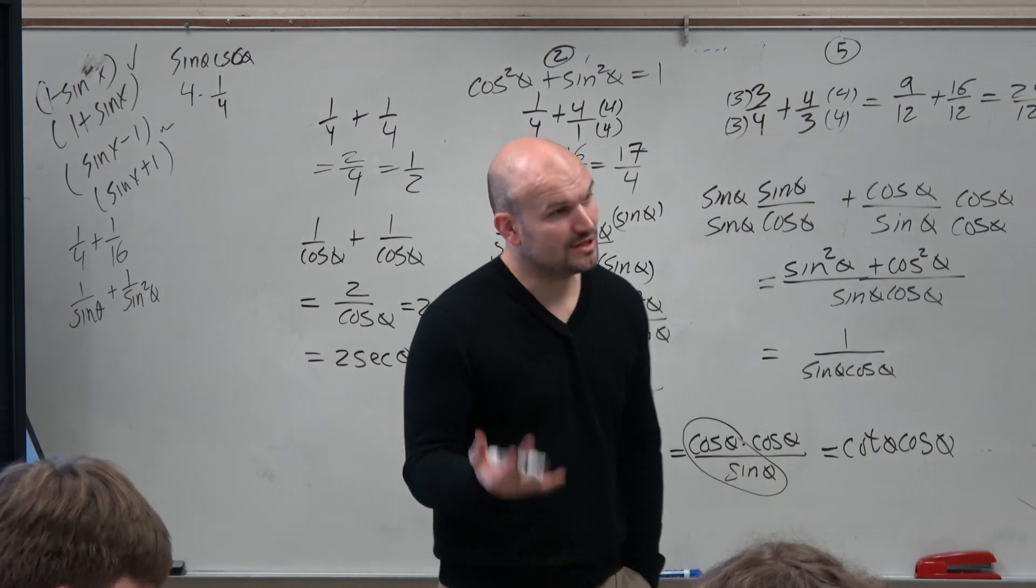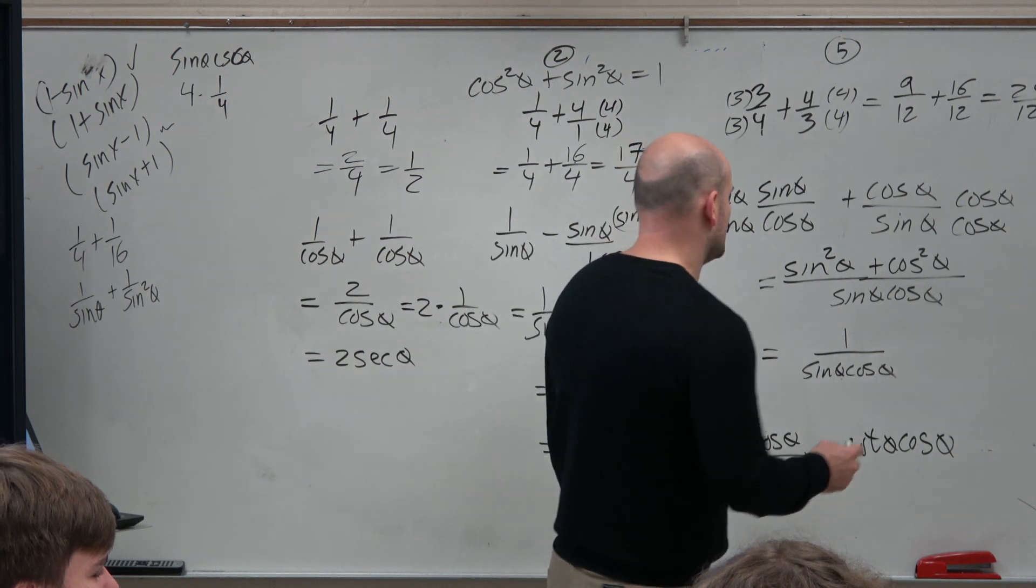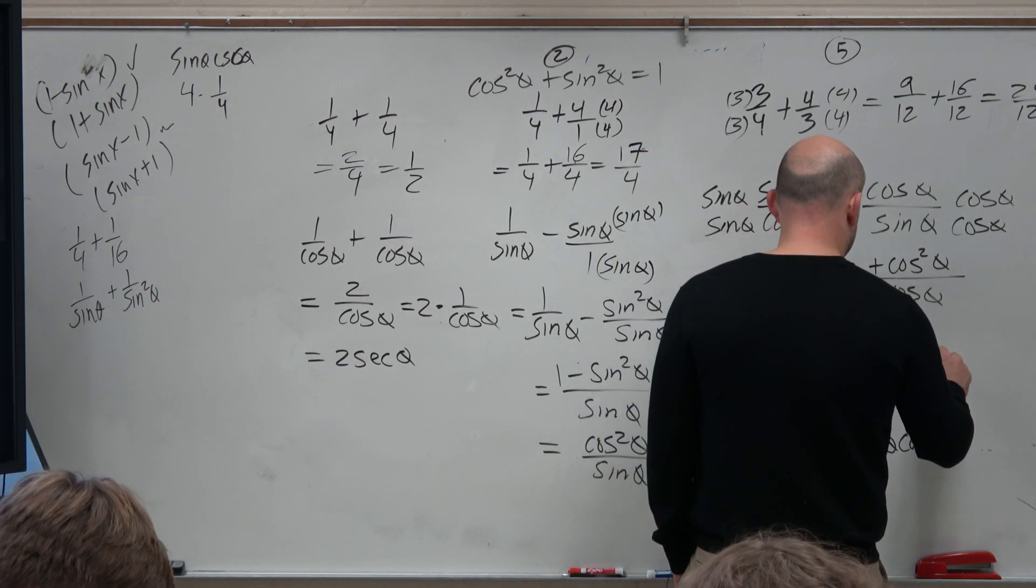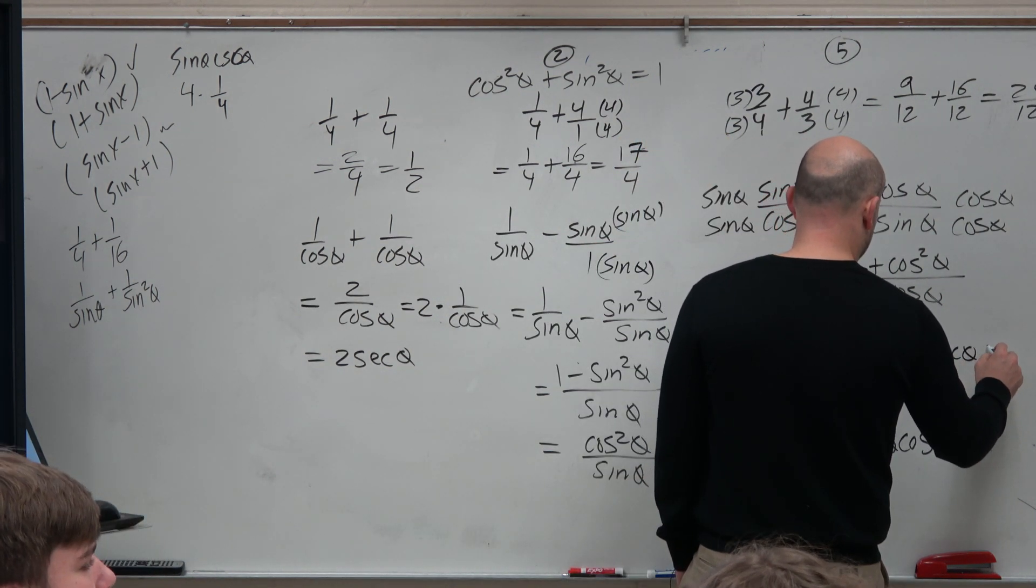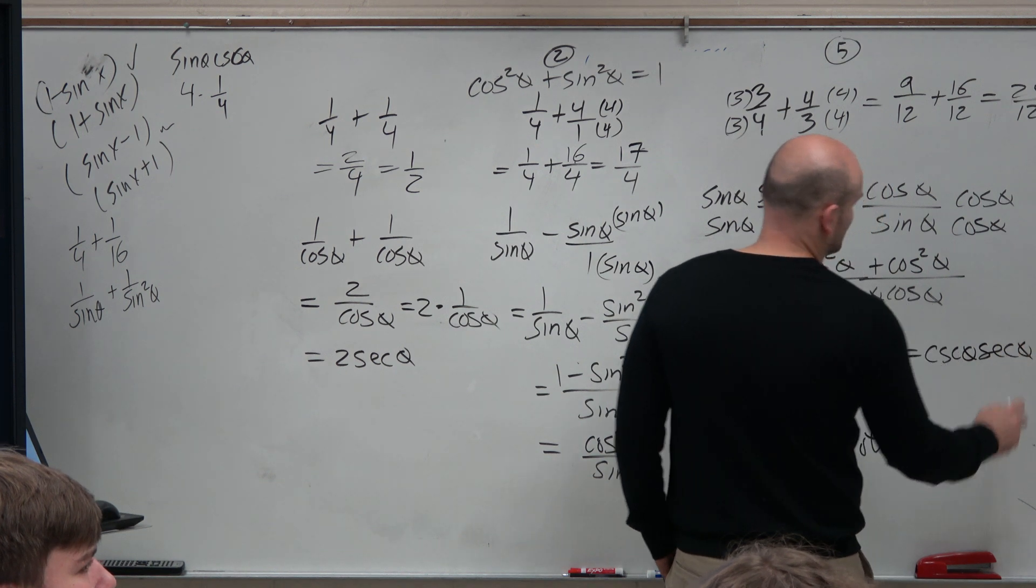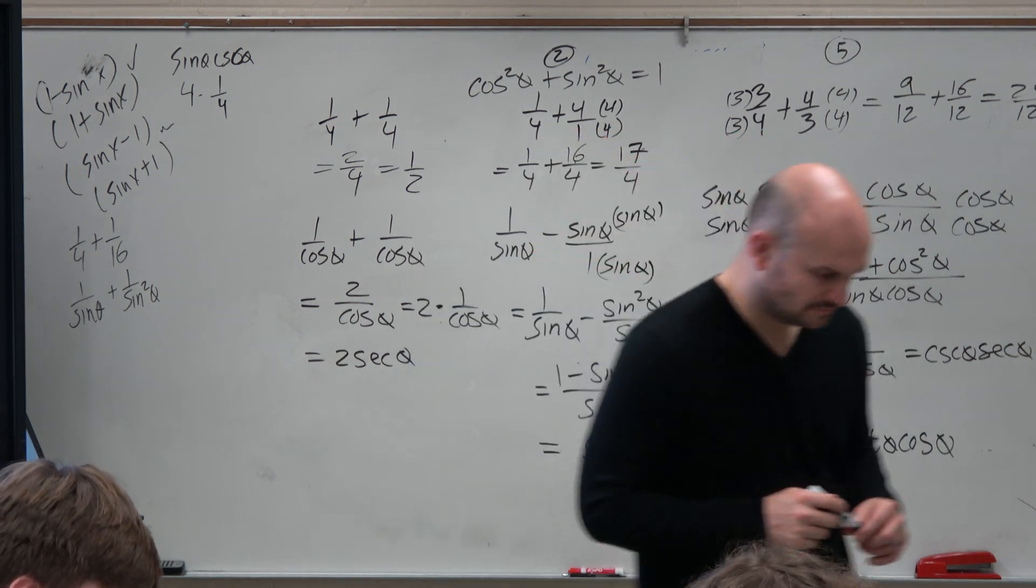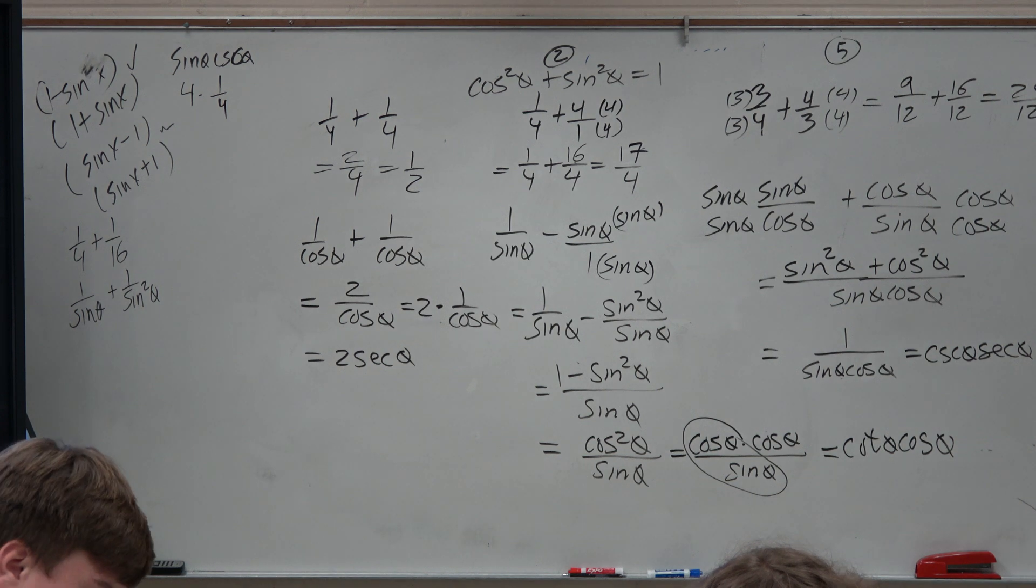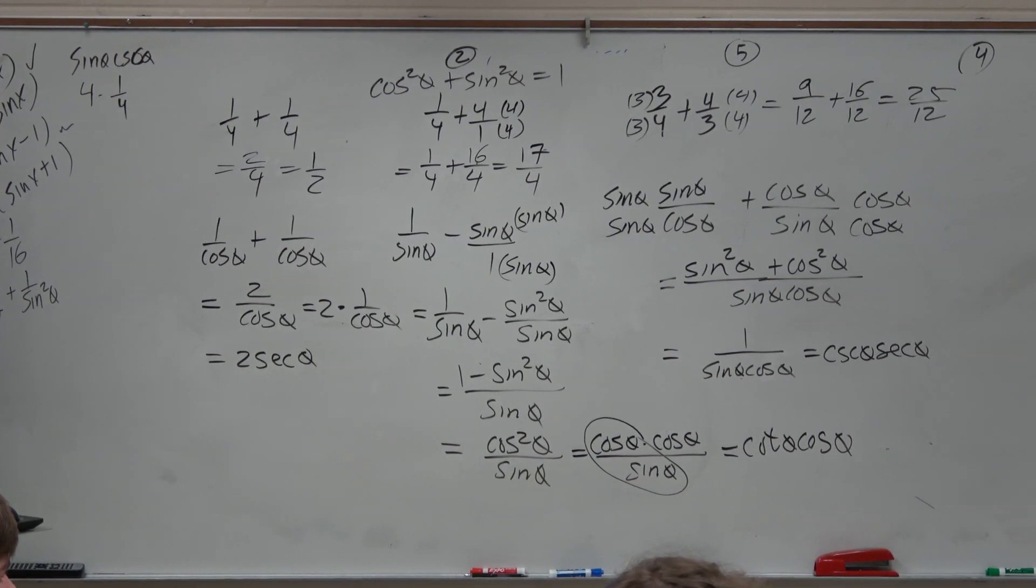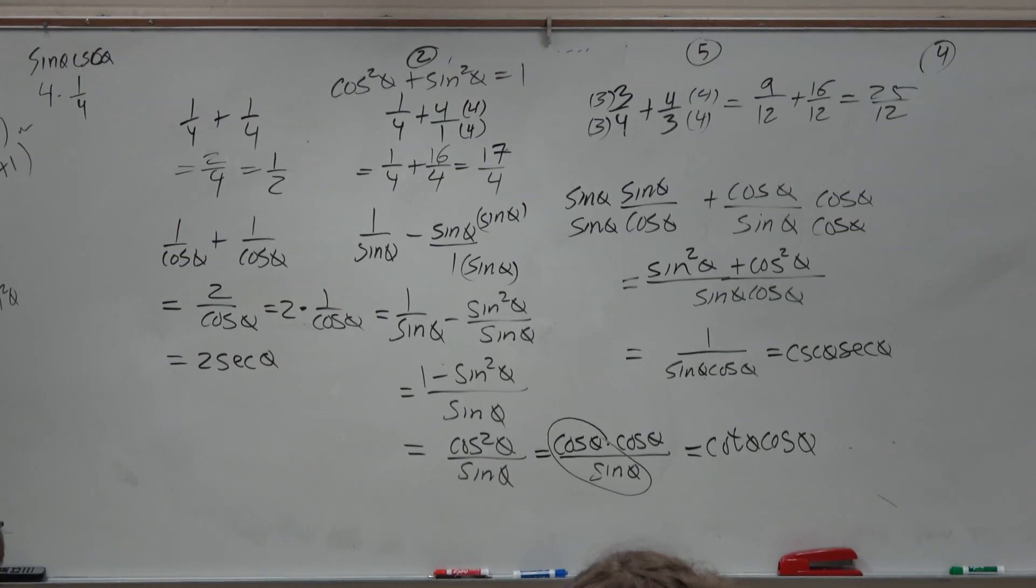And then, typically, we don't want to write this as a fraction. We prefer to write it as the reciprocal identities. So we can rewrite this as cosecant theta times secant theta. See how much fun this is, guys? You guys don't seem to be enjoying this enthusiasm I have going on here. So let's try here. It's really exciting.